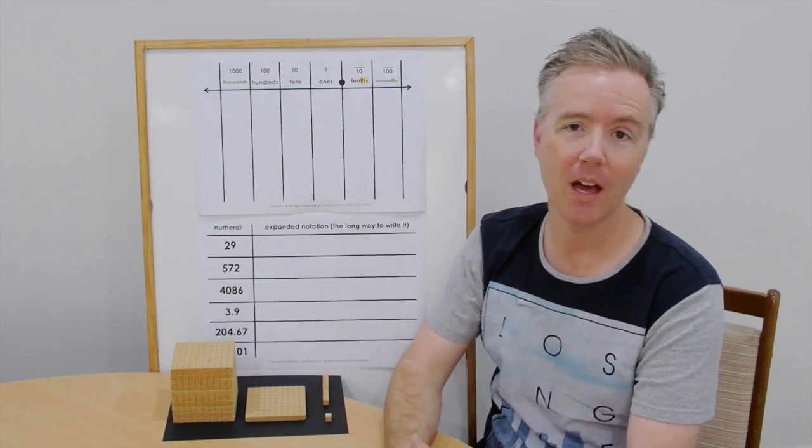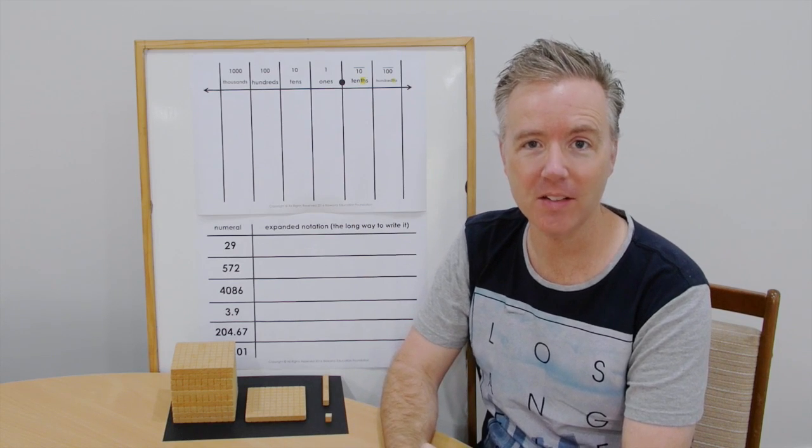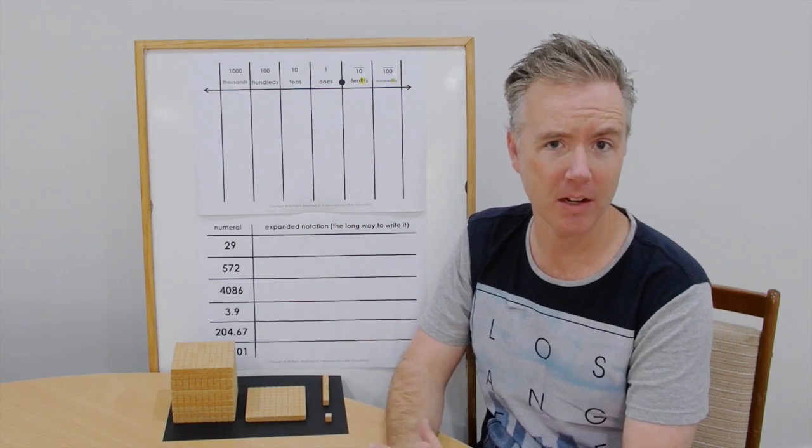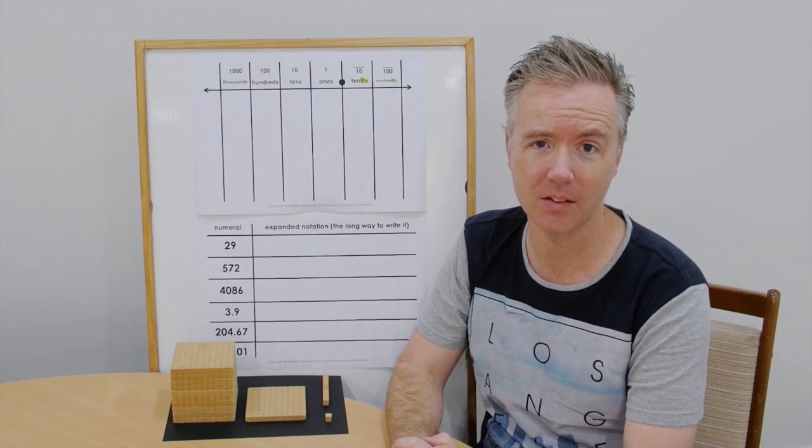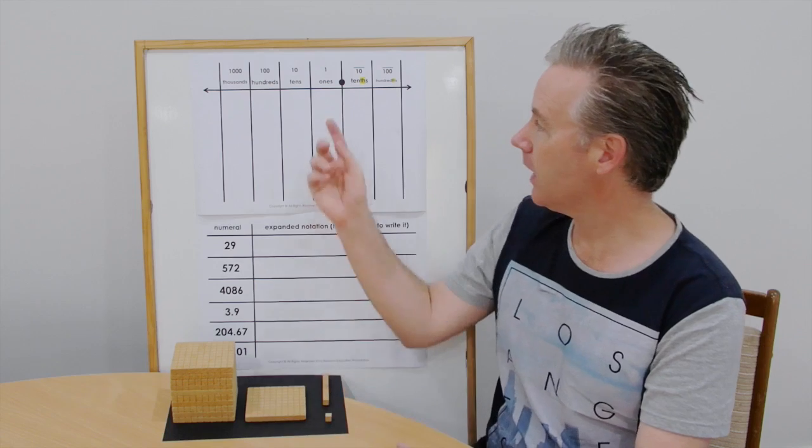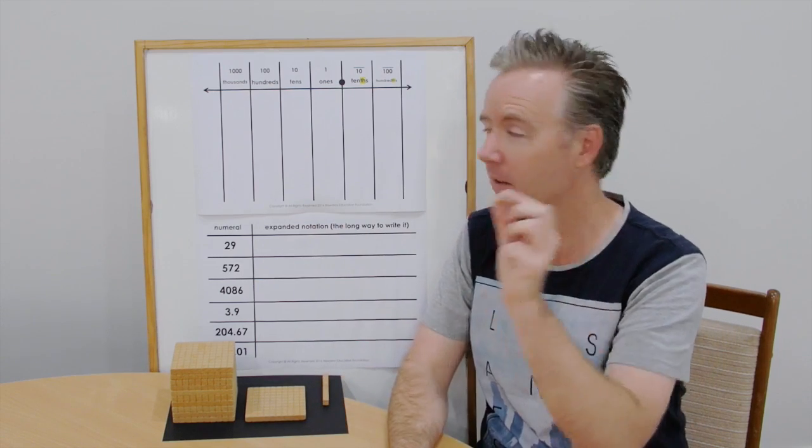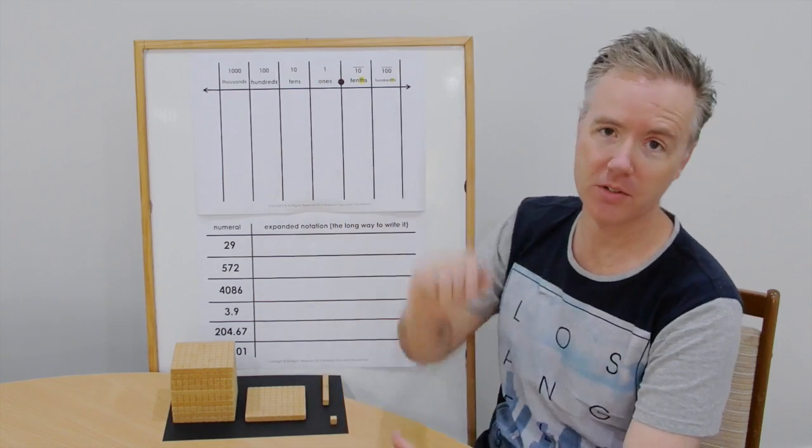Now you'll notice here we have our decimal point. That decimal point is critical to understand that all our whole numbers, it's always there. We just don't write it. So that's why I always like to make sure that I put it on my place value columns when I'm teaching this concept to my students. Now our first column we have is the ones column and we can represent it. The basic unit is of course one.